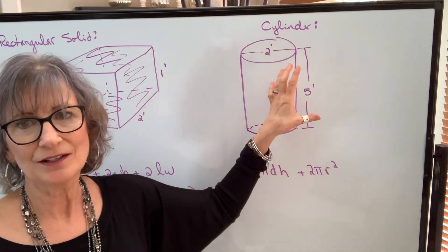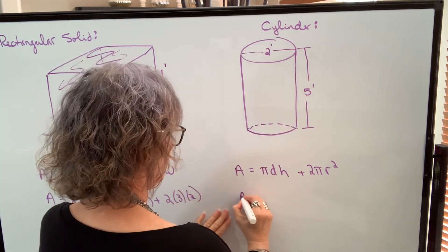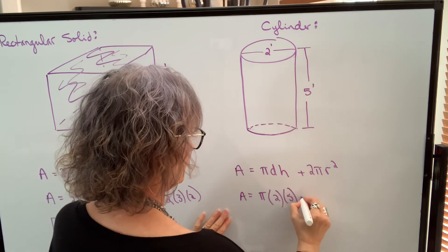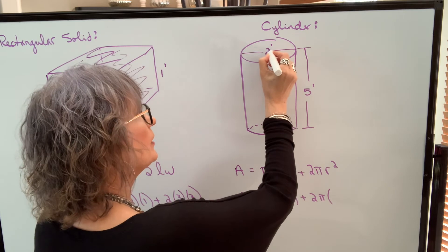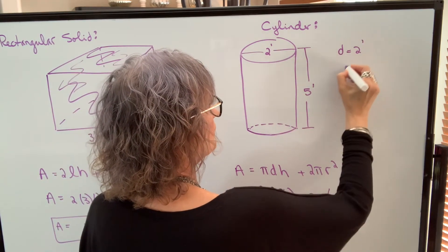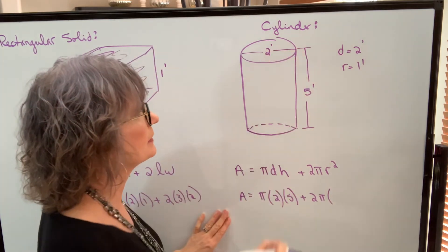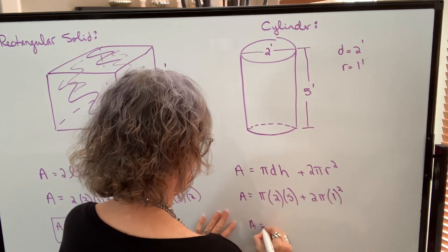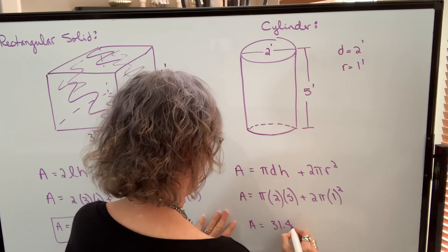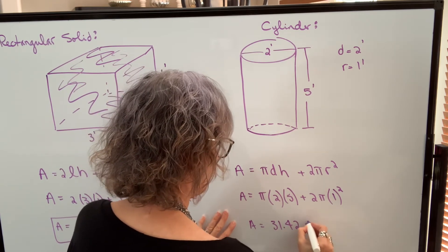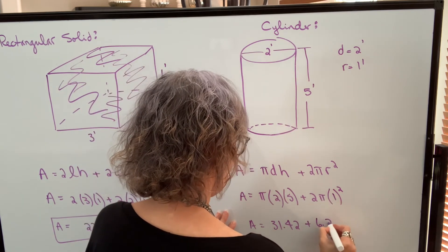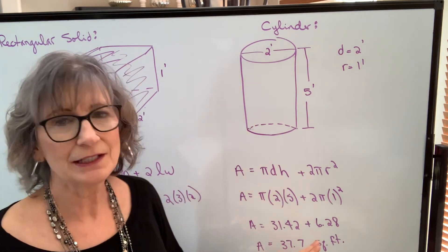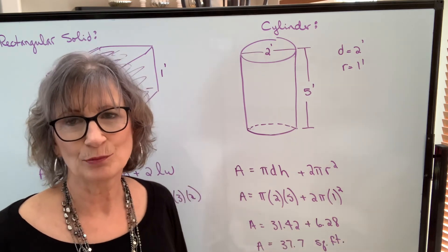If I was asked to find the surface area of this cylinder, I can just plug into my formula: pi times the diameter, which is two feet, times the height of five feet, plus two times pi times the radius squared. If the diameter is two feet, the radius is one foot. So I put one in for the radius and calculate. Pi times two times five will be 31.4142, plus two times pi will be 6.28. When I add those values together, I get 37.699 — rounded to 37.7 square feet.